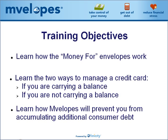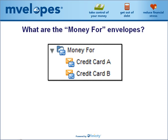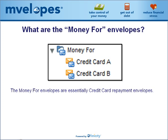Let's get started by introducing the money for concept. The money for envelope is essentially a credit card repayment envelope. The system generated money for envelope group is automatically created for you when you add a credit card or line of credit account to the system. The money for envelope for each account is where we fund, or set aside money, to make our next credit card payment.